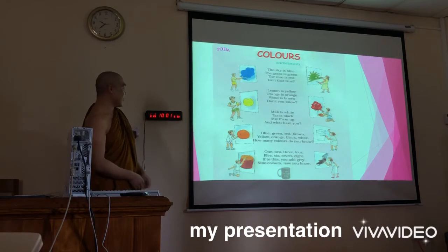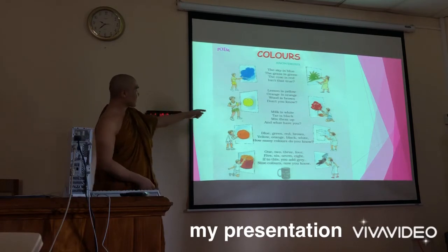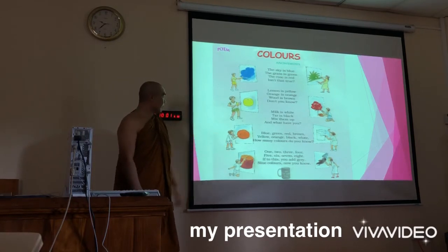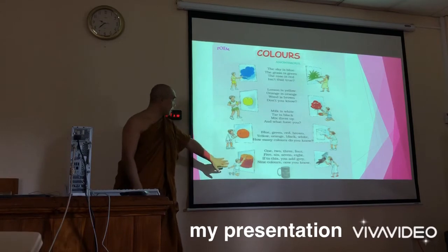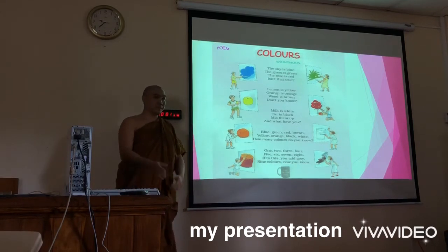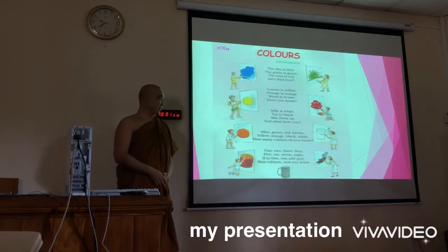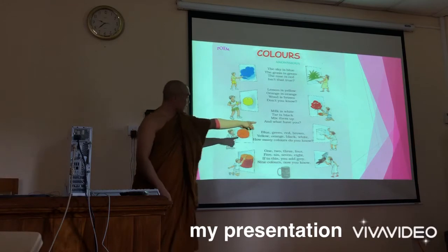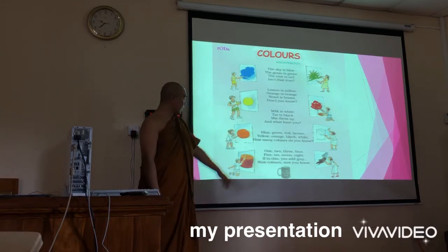And, lemon is yellow. Orange is orange. Wood is brown. Don't you know? Milk is white. Tar is black.